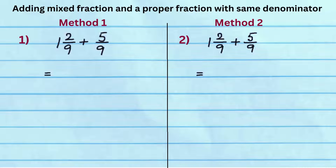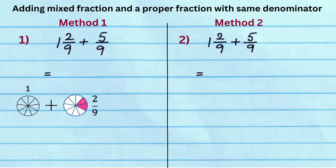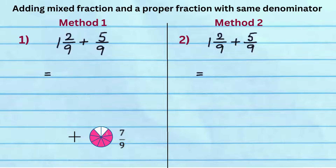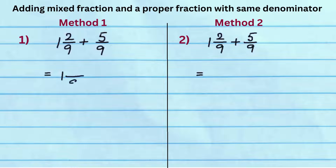In this example, note that we are adding 1 whole, 2 ninths, and 5 ninths. We get 1 whole and 7 ninths. We write the whole number 1, common denominator 9, and add the numerators 2 and 5 to get 7. We get the answer 1 and 7 ninths.